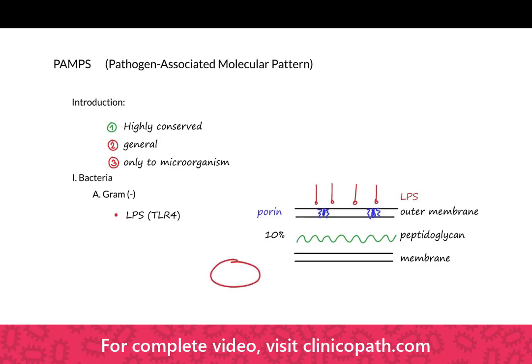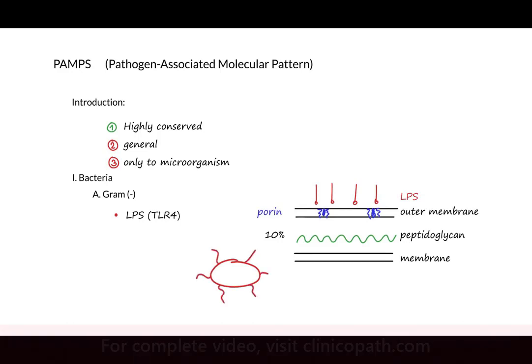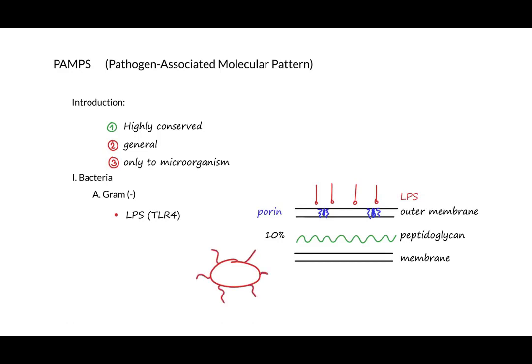If we look at a gram-negative organism in total, one of the things the Enterobacteriaceae have in common is that they are all motile because they all have flagella. A characteristic protein to go looking for would be flagellin.